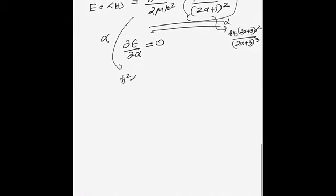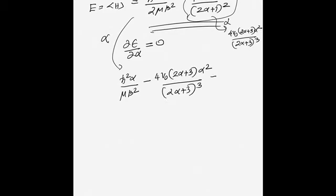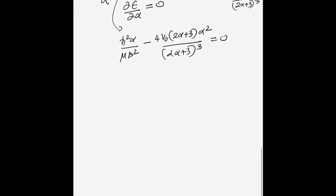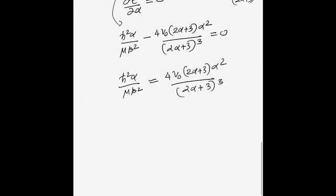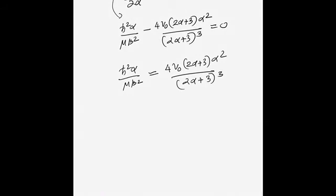Setting ∂E/∂α = 0 gives: ℏ²α/(μβ²) − 4V₀(2α+3)α²/(2α+1)³ = 0, which rearranges to ℏ²α/(μβ²) = 4V₀(2α+3)α²/(2α+1)³. We now introduce a new constant to simplify this relation.